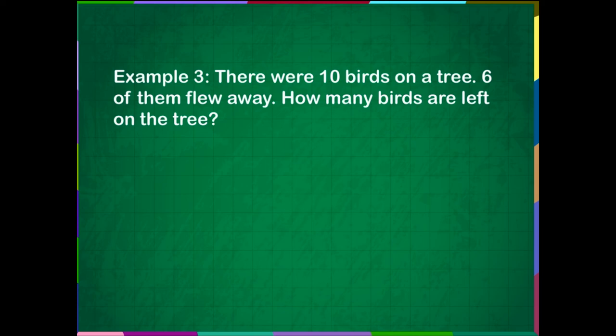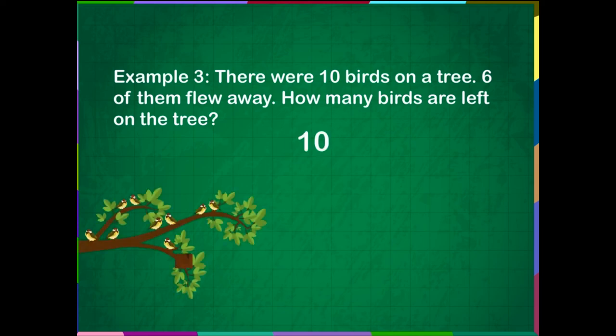Example 3. There were 10 birds on a tree. 6 of them flew away. How many birds are left on the tree? Answer: 4 birds are left.